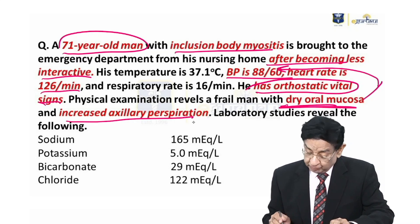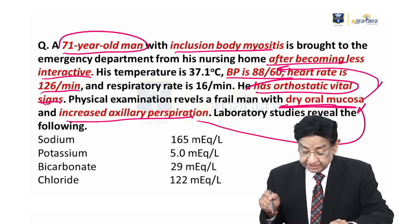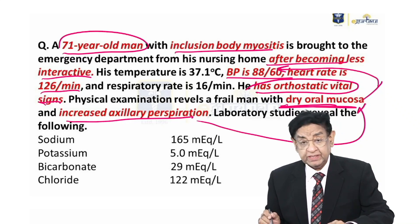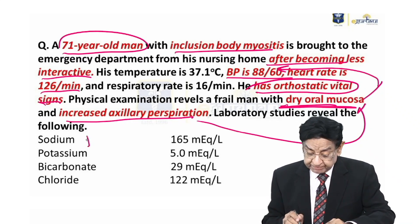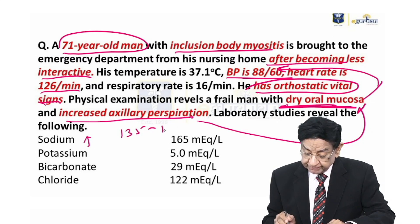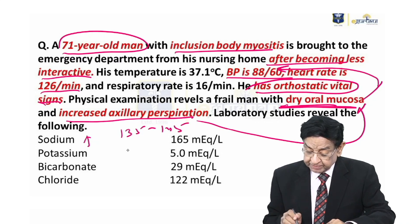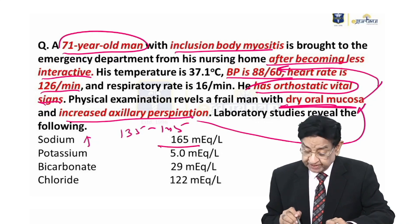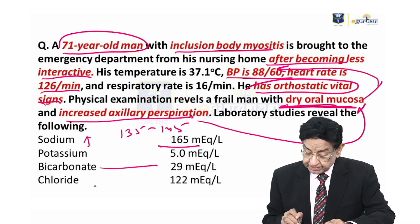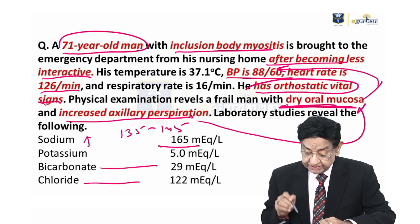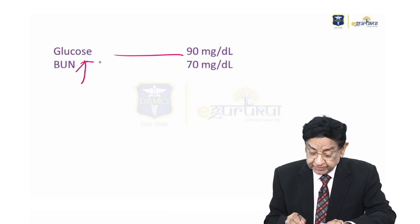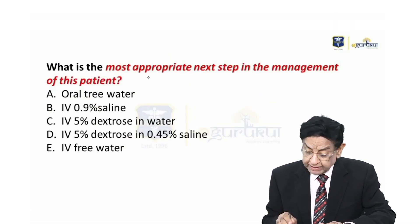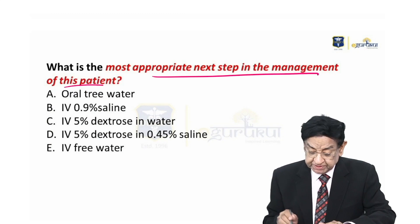Increased axillary perspiration can contribute to dehydration. Looking into lab parameters, sodium is definitely much elevated. Normal sodium is 135 to 145 milliequivalents per litre, but here it is 165. Potassium, bicarb, and chloride are again increased. Glucose is 90 milligrams, but BUN is very much increased.